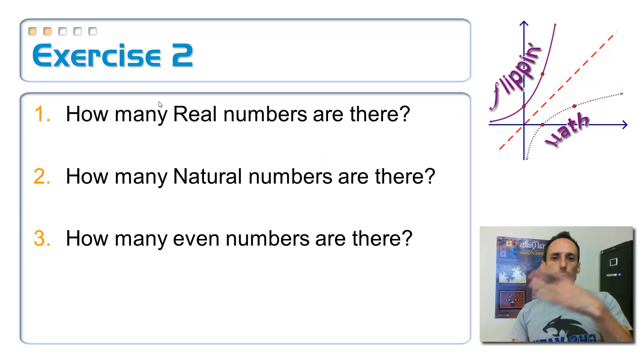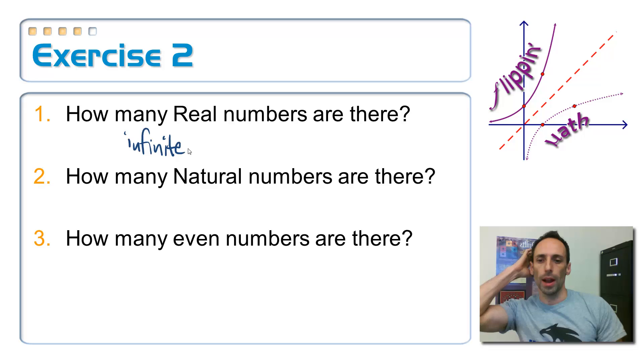So the second one, just some questions here. How many real numbers are there? That's right. There's an infinite number of them. How many natural numbers are there? Well, again, there's an infinite number of them. That makes sense. How many even numbers are there? Well, they never stop either. Two, four, six, and then there's an infinite number of those.